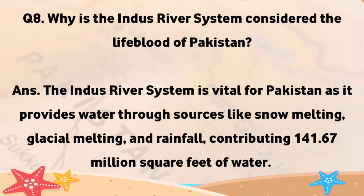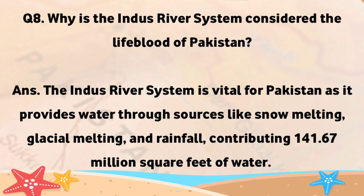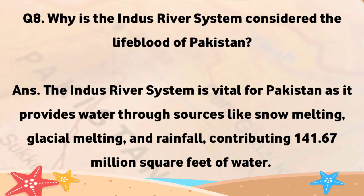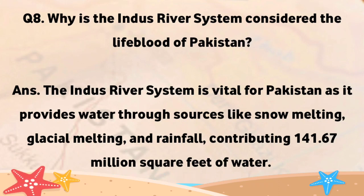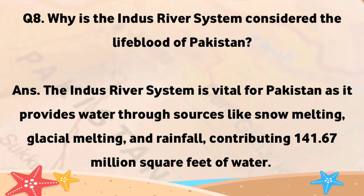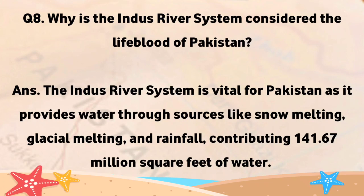Dariyai Sindh ke nizam ko Pakistan ke liye aahm kiyun samjha jata hai? Dariyai Sindh ka nizam Pakistan ke liye bhoot aahm hai kinkhi ye barf pigalne, barfani tawde pigalne aur barish jaysayse zarai se paani faraham karta hai, jis se 141.67 million murabba fit paani faraham hota hai.